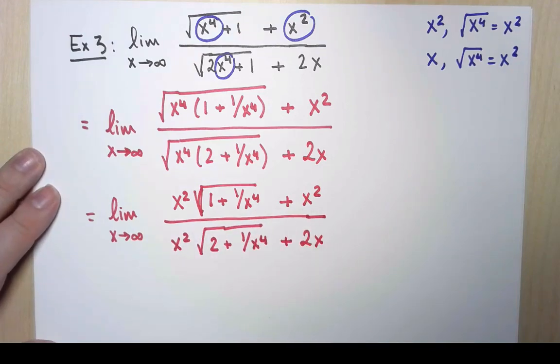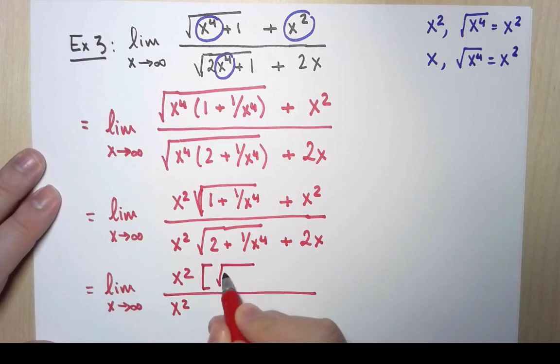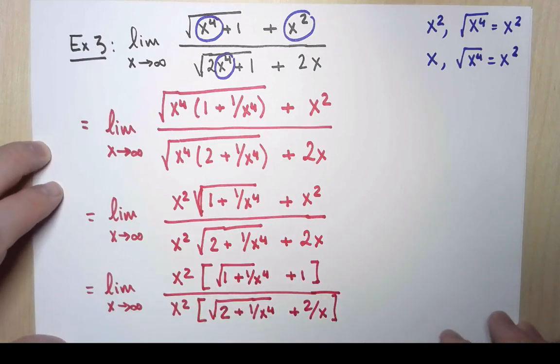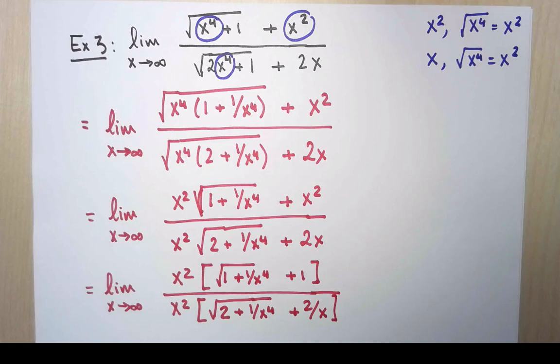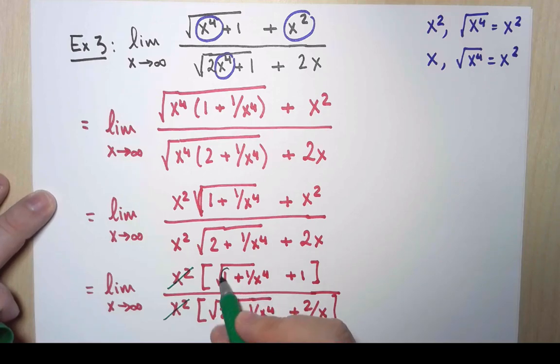And now it seems clear. x squared is the biggest term. So I'm going to factor x squared both at the top and at the bottom. And finally, I can cancel the x squared at both terms, and I'm left with a bunch of things that go to zero. The only things that don't go to zero are these three terms.